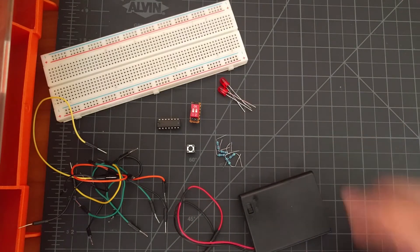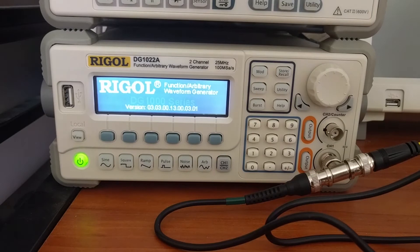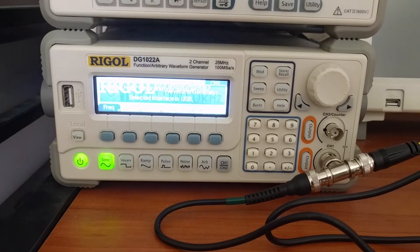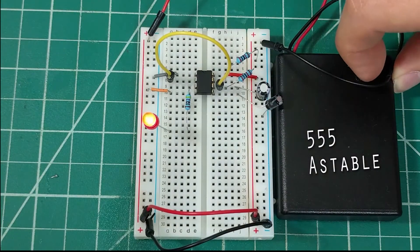You will also need a 6-volt power supply. For the clock signal, I will be using my function generator to output the clock pulse. If you don't have a function generator, you can build the 555-timer astable circuit to output a clock signal.